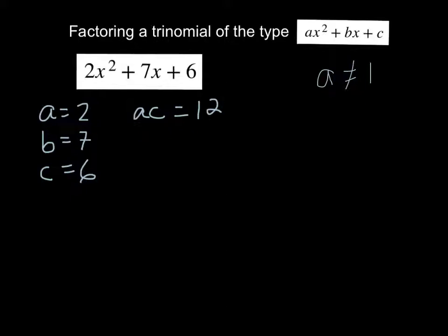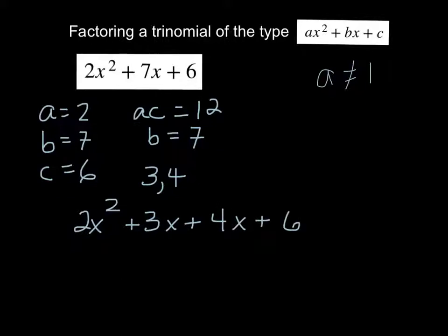We need factors of ac that add up to b, which is 7. So factors of 12 that have a sum of 7. Take a moment, find your factors. Well let's see, it's not 1 and 12, it's not 2 and 6, it's 3 and 4. Then what we do is we separate out that center term into 3x plus 4x, and then we do that factor by grouping method.